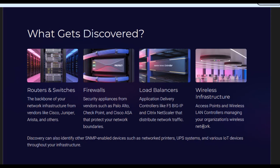So what exactly does ServiceNow find when it's doing all this discovery? Pretty much everything that makes up your network. We are talking about backbone devices like routers and switches from major vendors like Cisco and Juniper — the traffic cops of your network. Then there are firewalls from companies like Palo Alto, Checkpoint, and Cisco ASA — your network security guards. Load balancers like F5 Big-IP and Citrix Netscaler are also discovered, ensuring your applications run smoothly by distributing network traffic efficiently. And don't forget wireless APs, access points, and wireless LAN controllers that manage your Wi-Fi. Beyond this, ServiceNow can also find other SNMP-enabled devices like networked printers, UPS systems that provide backup power, and various IoT devices connected to your network.